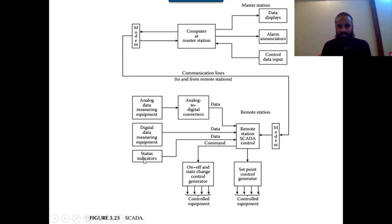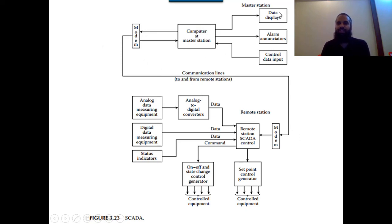The block diagram of the SCADA system shows analog or digital sensors feeding information to the Remote Terminal Unit (RTU). From the RTU, a modem receives and sends information to the master station or central control. Between the master station and remote station, a modem facilitates communication — alternatively a wireless link can be used. From the central control system, there are three kinds of outputs: data display, alarms, and control, which are used to manage all parameters of the remote station.